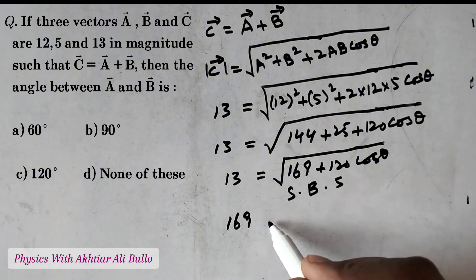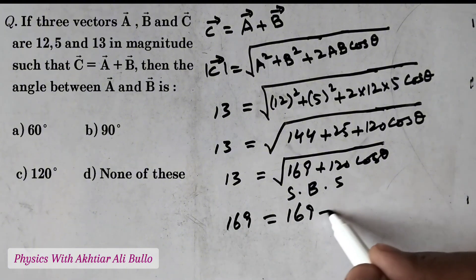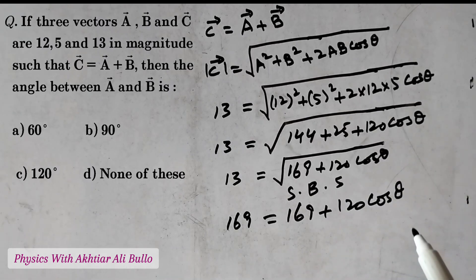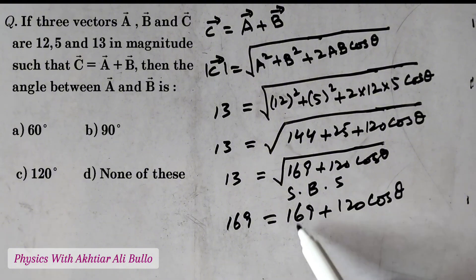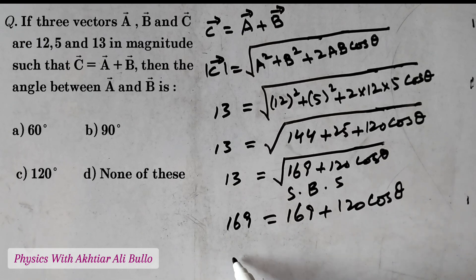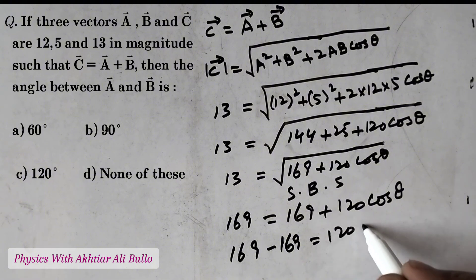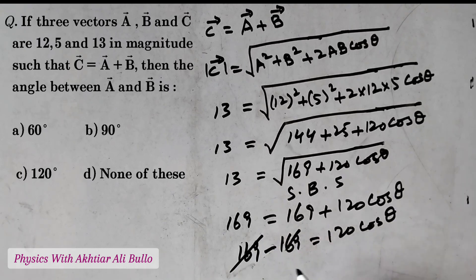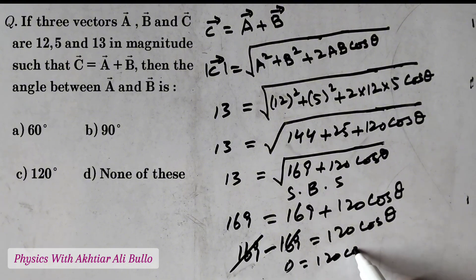To remove the square root, squaring both sides: 13 squared, which is 169, equals 169 plus 120 cosθ. Taking 169 to the other side gives 169 minus 169 equals 120 cosθ. The 169 values cancel each other out, leaving 0 equals 120 cosθ.